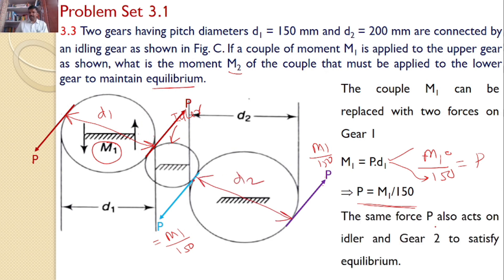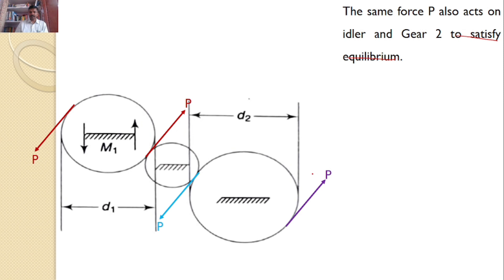The couple acting at gear 2 is M₂ = P × D₂. Since P = M₁/150 and D₂ = 200 mm, we get M₂ = (M₁/150) × 200.